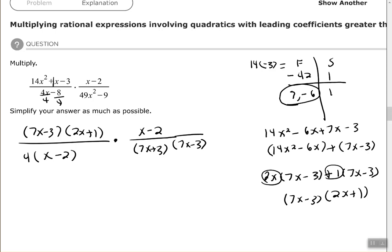After we have it completely factored, everything completely factored, then we look for the common factors. Remember binomials cancel with like binomials. So this 7x minus three in my numerator will cancel with the 7x minus three in my denominator. The x minus two in my numerator will cancel with the x minus two in my denominator.